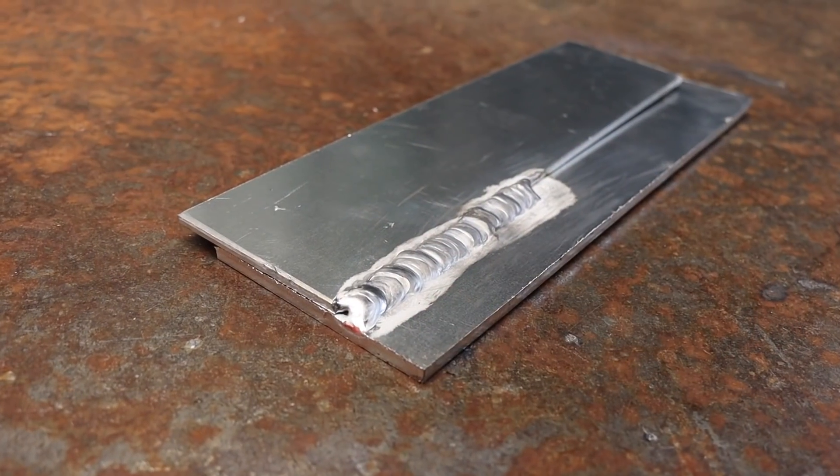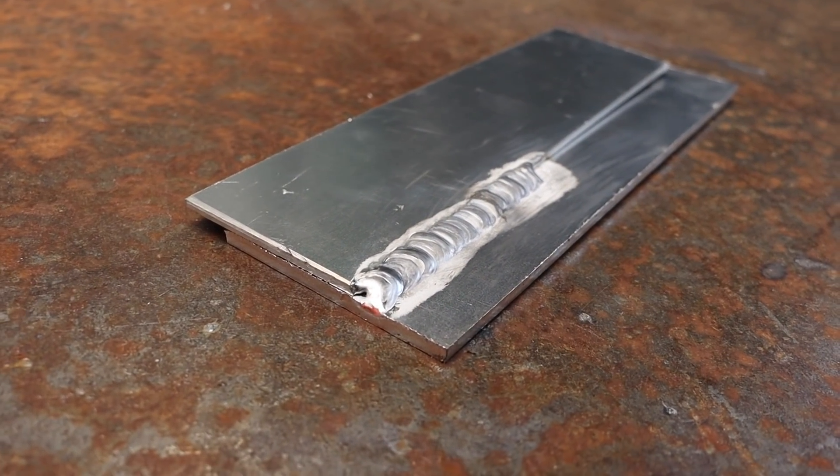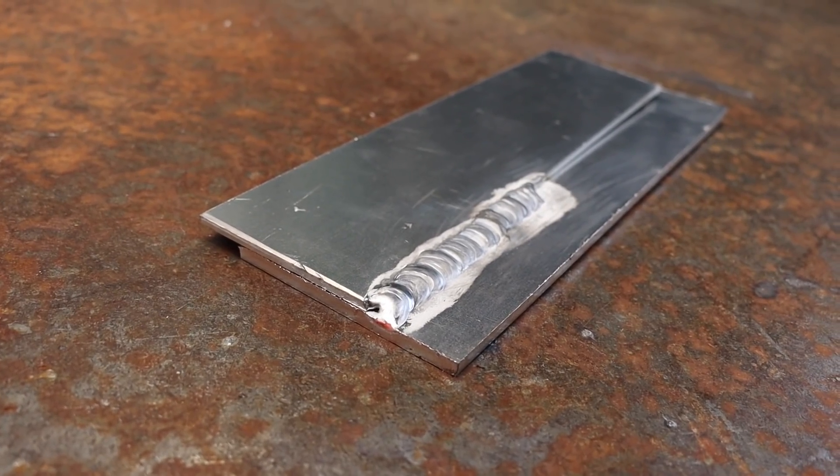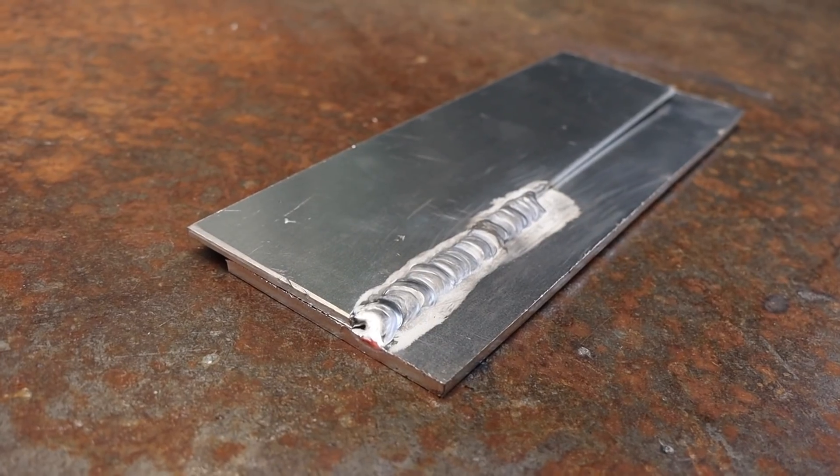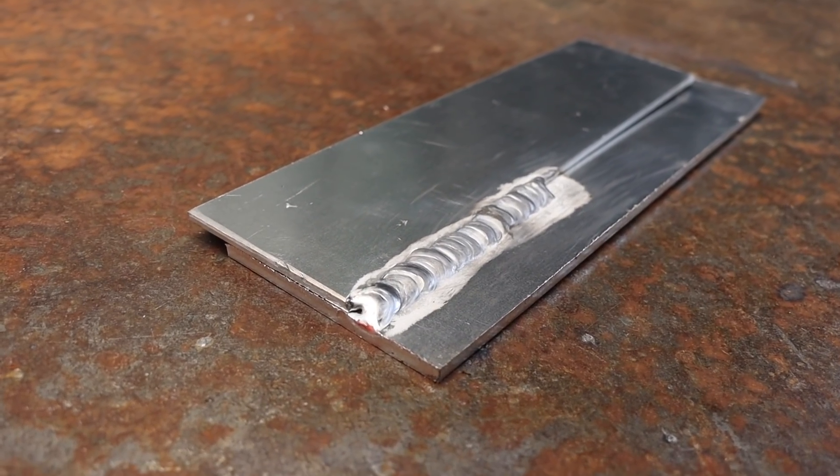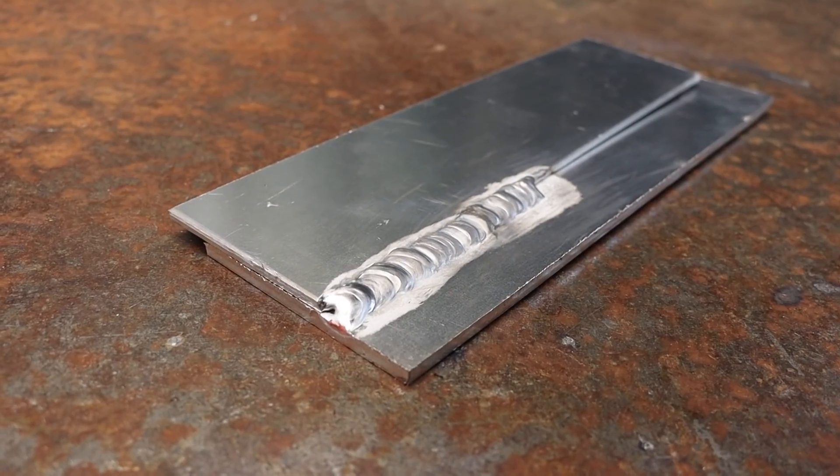This is my 5mm to 3mm weld. As you can see it's quite wide but I am using a 3.2 diameter filler rod and a 3.2 diameter tungsten. This is just so it creates enough heat to melt the 5mm plate.